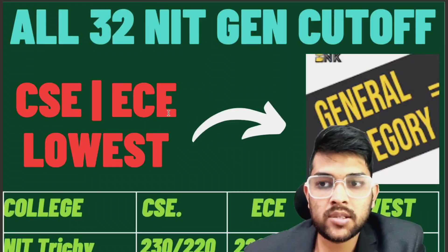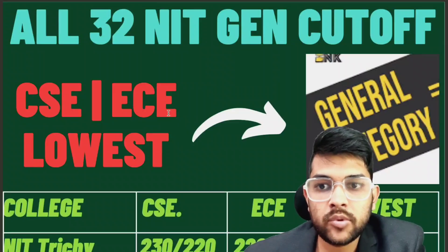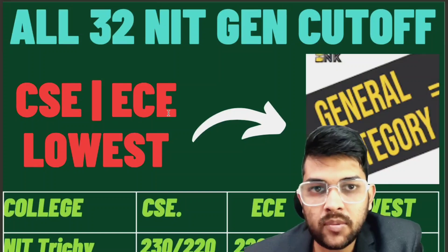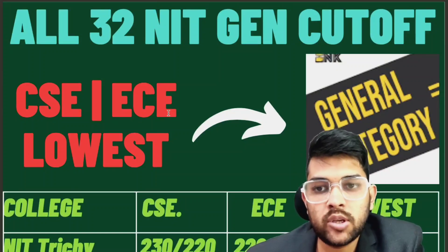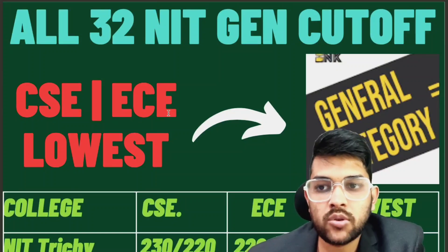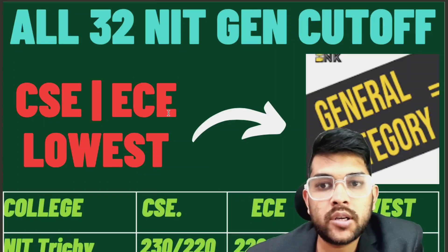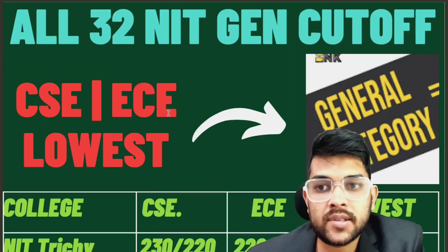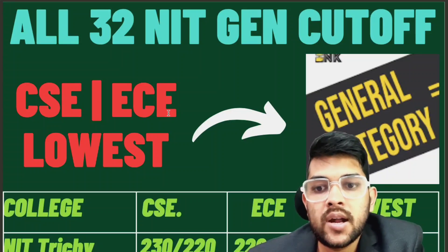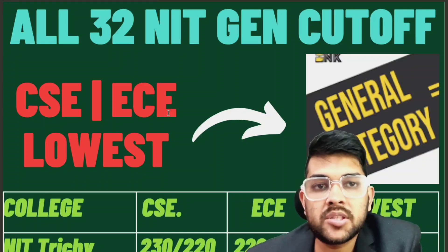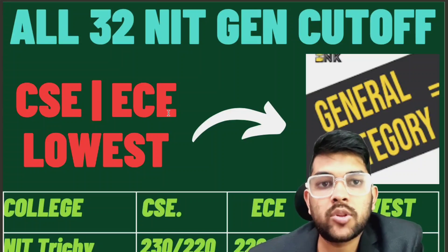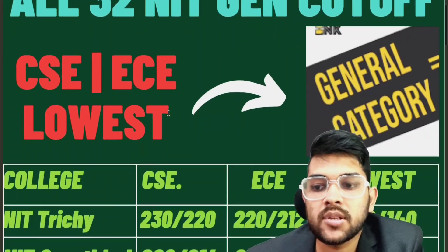This is Amit, and here is the feed overview for general students. I have provided a similar video for OBC, SC/ST, and PwD categories as well. Here I am going to cover all 32 safe marks for the general category across CSC, EC, and all types of branches. Please try to watch the video to the end so you will get complete information.